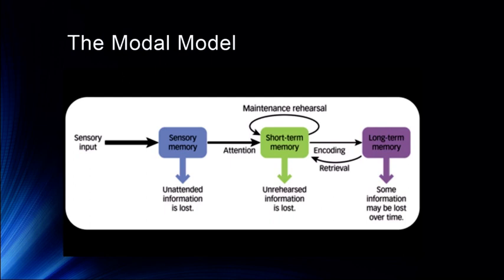Whatever you don't attend to is lost. Whatever we've directed our attention to then gets processed in short-term memory. According to this original view, maintenance rehearsal was an important part of this — if you held on to information in short-term memory by saying something to yourself over and over again, like a phone number, that's maintenance rehearsal, and that's how things get kept in short-term memory. Things then get encoded into long-term memory. Unrehearsed information from short-term memory is lost, and information is retrieved from long-term memory back into short-term memory. We also now know that maintenance rehearsal isn't a particularly effective encoding strategy for long-term memory.